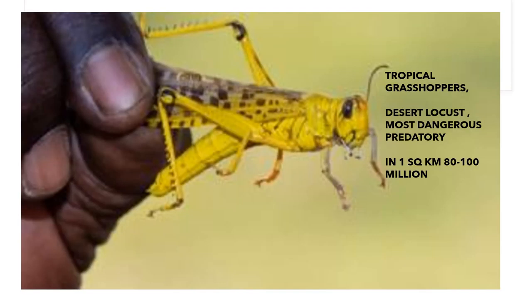First of all, what is locust? Locust is actually a collection of millions of grasshoppers — it is not a single organism. It is a collective noun given to millions of grasshoppers flying across states and countries. These are tropical grasshoppers, very different from normal grasshoppers, as their flight capacity allows them to cover huge distances across continents and seas.